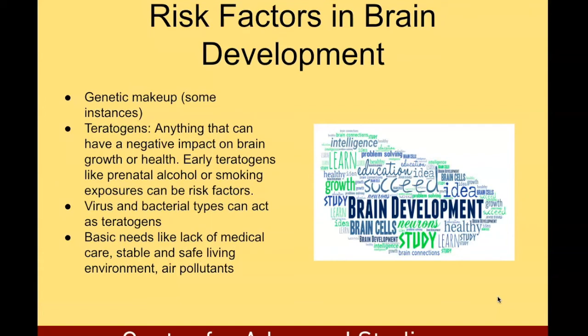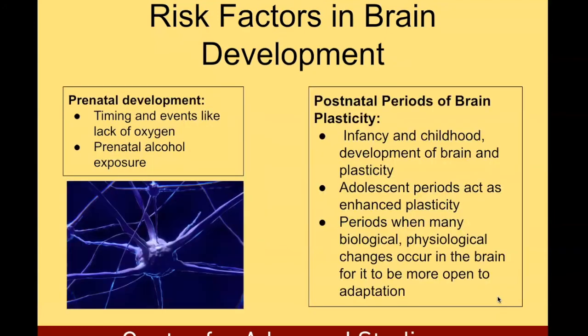There are certain risk factors in brain development. Genetic makeup is a factor in some instances. Teratogens — anything that can have a negative impact on brain growth or health — are also risk factors. Early teratogens like prenatal alcohol or smoking exposure can be risk factors, as can viral and bacterial agents. Basic needs such as lack of medical care, a stable and safe living environment are also factors. Additional risk factors include timing and events like lack of oxygen, prenatal alcohol exposure, and postnatal periods of heightened brain plasticity such as infancy and childhood. Some adolescent periods also act as enhanced periods of plasticity — times when many biological and physiological changes occur in the brain, making it more open to adaptation.